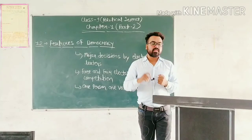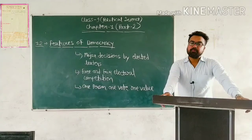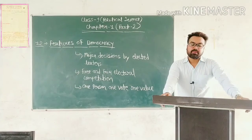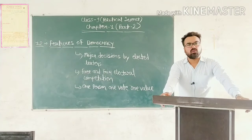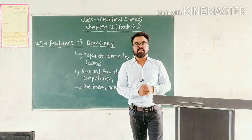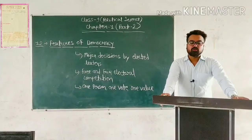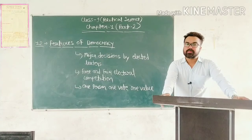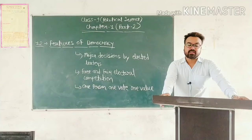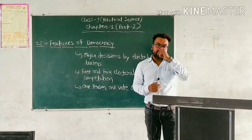Very first, آپ دیکھیں: major decision by elected leaders. سب سے پہلے جو story ہے وہ پاکستان کی story ہے۔ In Pakistan, General Pervez Musharraf laid a military coup in October 1999. انہوں نے military کا ساسن 1999 میں لگا دیا۔ He overthrew a democratically elected government and declared himself as Chief Executive.